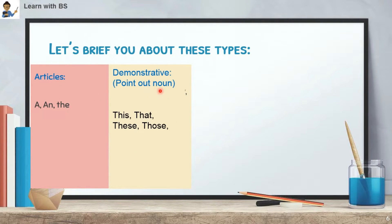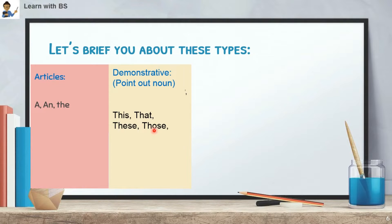Then we have Demonstrative. Demonstrative determiners point out a noun. They are: This, That, These, Those. For example — 'this book', 'that book', 'these books', 'those books'. 'This' is used when something is near and singular; 'that' is used when it is far and singular. 'These' is used for plural near, and 'those' for plural far.